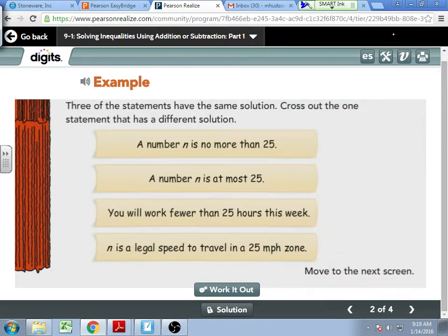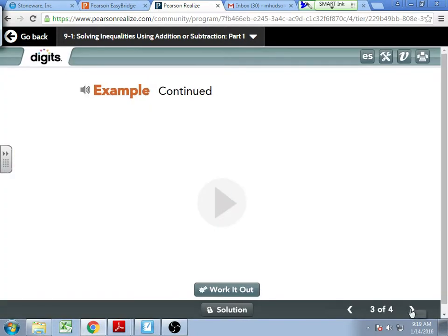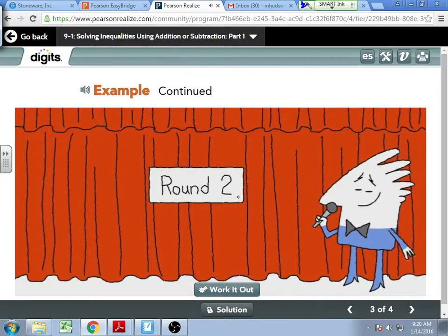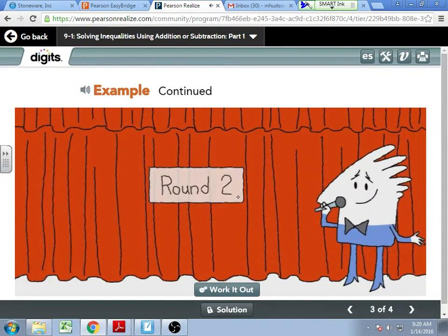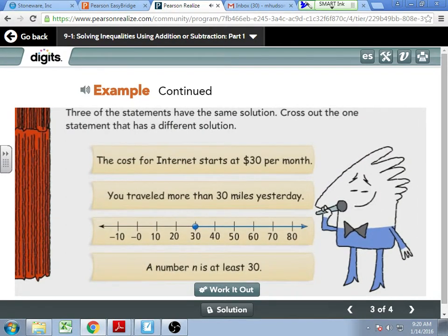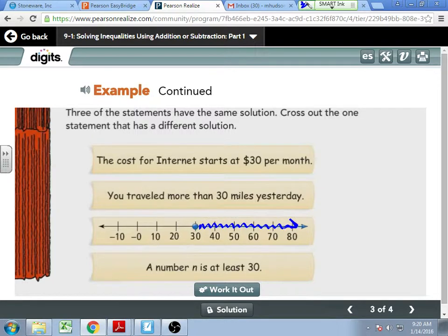Alright, try round two on the back of your paper. I apologize if the note printed a little weird. Round two got stuck on the bottom of this page, but you want to flip to the back. Write out those three, or sorry, those four. Three should match and one will be different. Alright, let's see what challenge is behind curtain two.